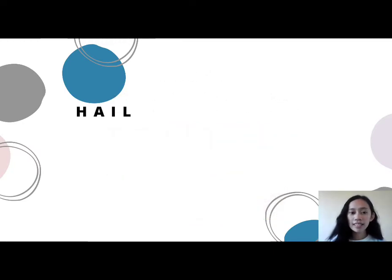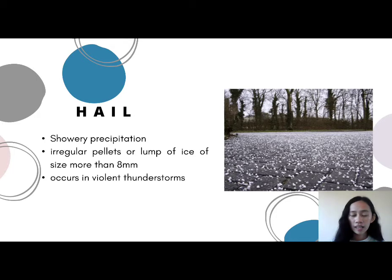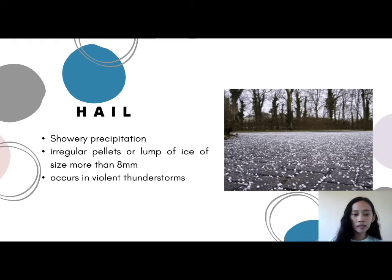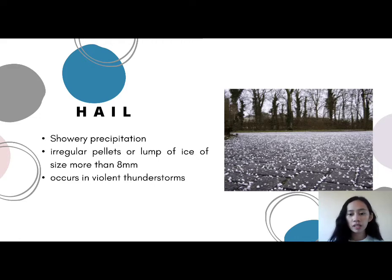And lastly, we have hail. Hail is showery precipitation — irregular pellets or lumps of ice of size more than 8 mm. It occurs in violent thunderstorms. So instead of snow, this is what we experience in the Philippines.